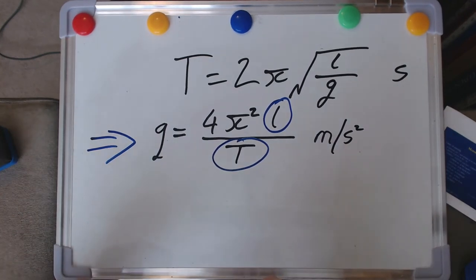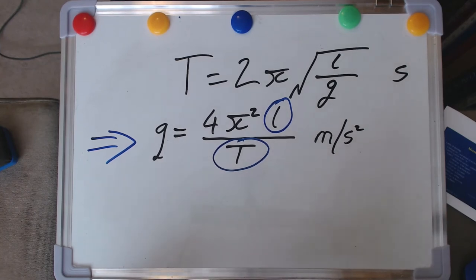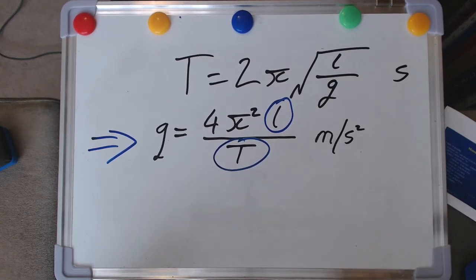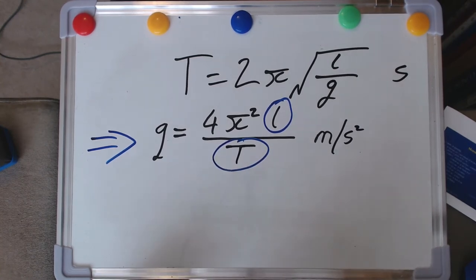And in fact, this is exactly what has happened in the past. People have used very sensitive measurements of the swing of a pendulum in order to measure the gravitational attraction across the Earth's surface.